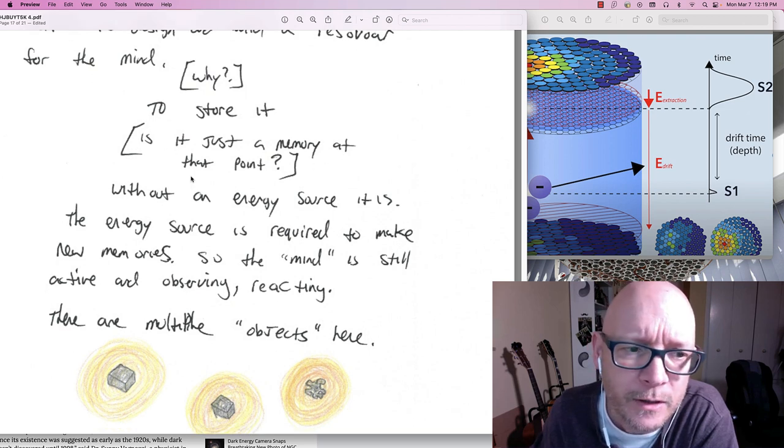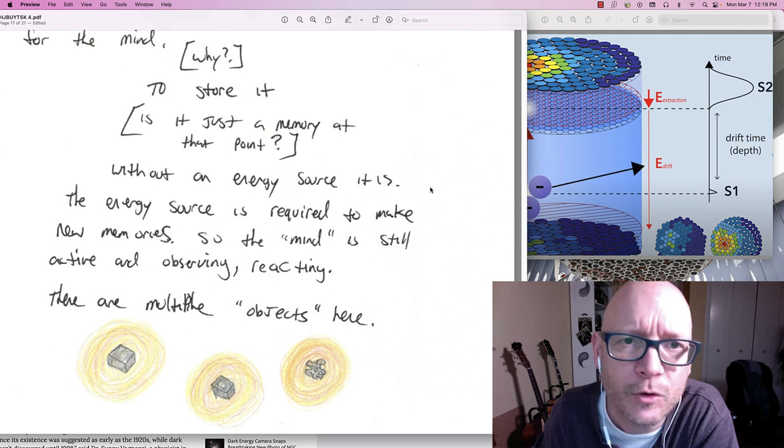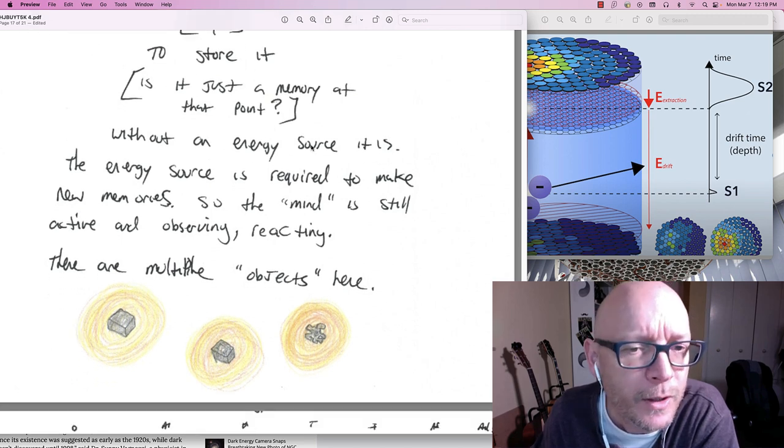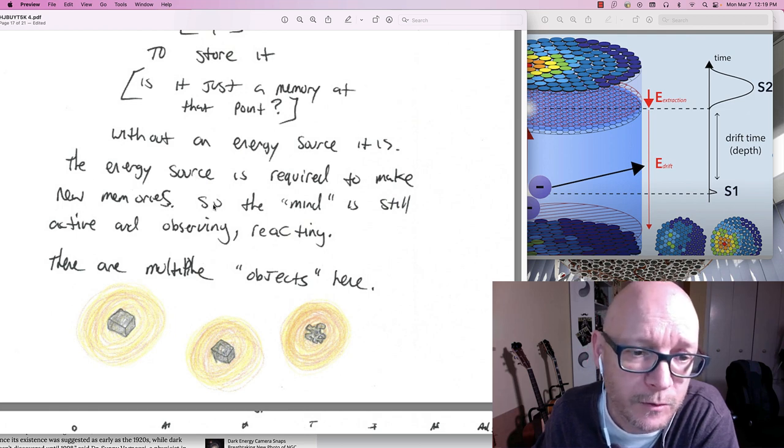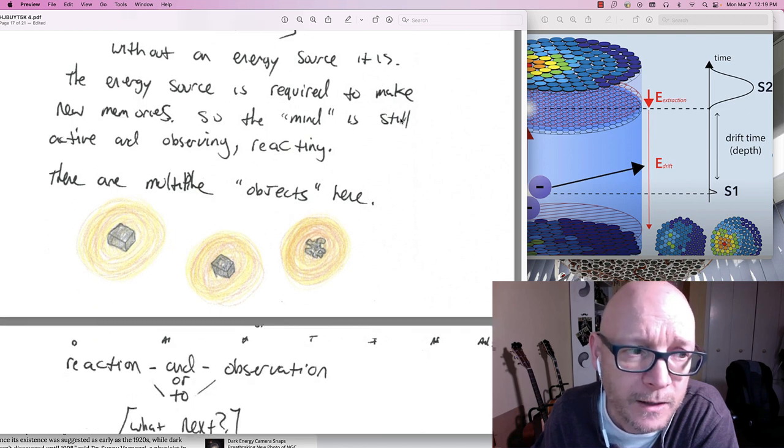There are multiple objects here. The weakly interacting massive particle and the detector. Reaction and or response to observation. What next? Well I want to describe something new. I do.